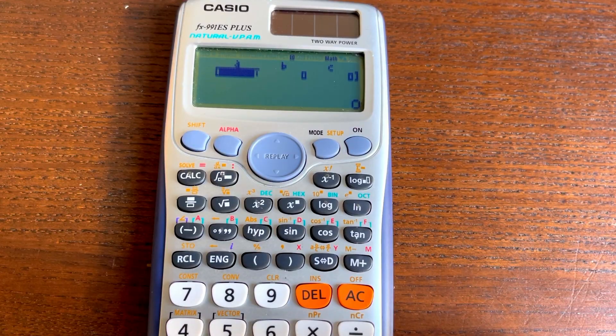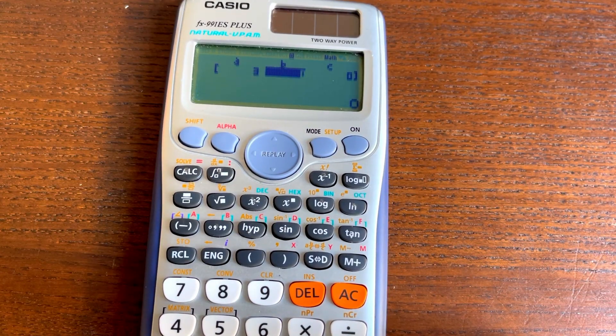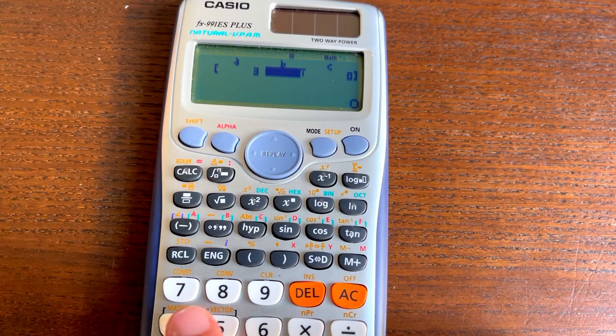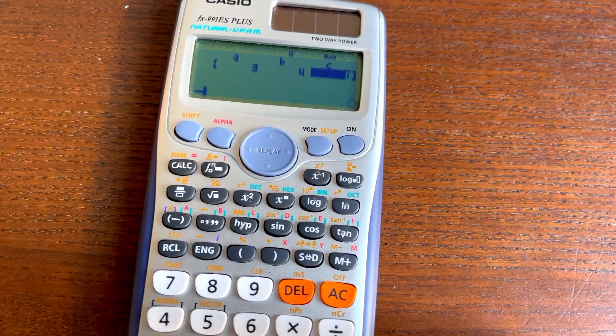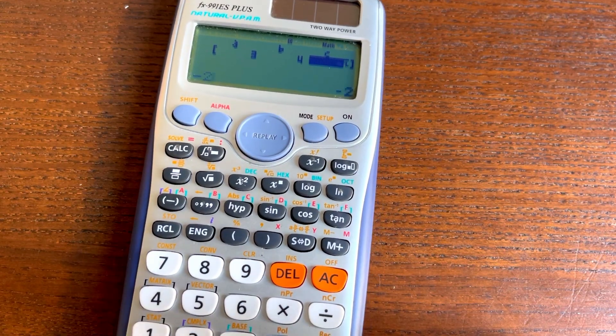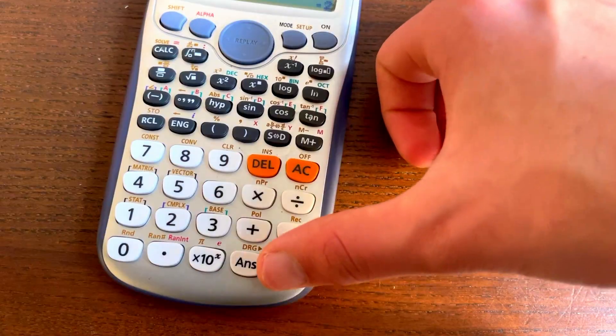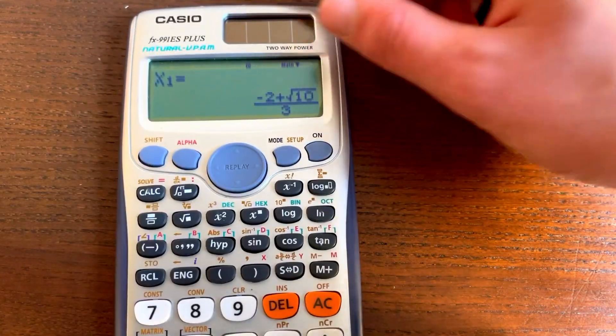So we write our 3 into the A, click equals, then we write our plus 4, so we just write our 4 into that, then we write our minus 2 into that. And then we get given this, if we click equals.